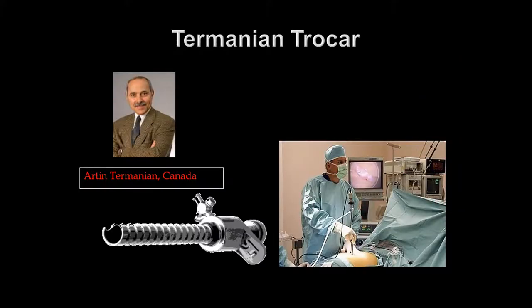This is another trocar designed by Otin Termanian from Canada, which has a spiral on the outside with a small spike tip at the end. By a screwing movement, we are able to enter layer by layer into the entire abdominal wall, while the optics kept inside the trocar give a clear view of what is happening.